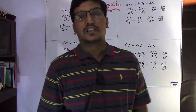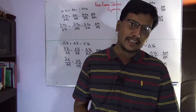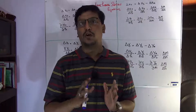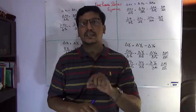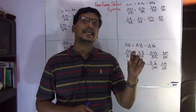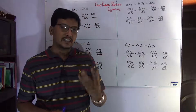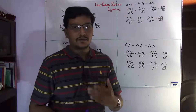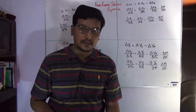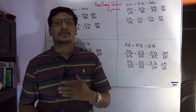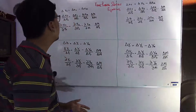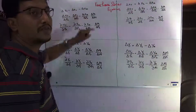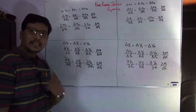Hello everyone, Assalamualaikum. We are going to discuss the four possible Slutsky equations. In the last lecture on the Slutsky equation, we discussed in detail the graphical mechanism used to derive Slutsky equation number one. The total effect is equal to the substitution effect minus the income effect, and we discussed in different approaches how this equation is verified and balanced.